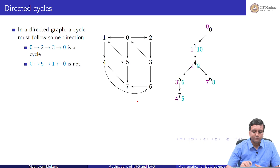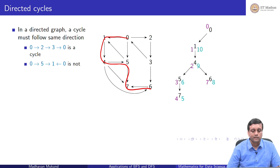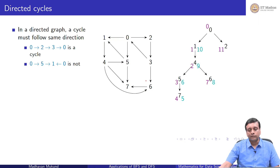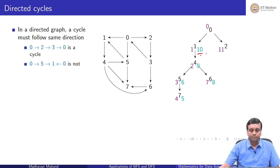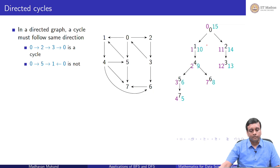Coming back to 0, we now explore the right side — the other neighbor of 0, which is 2, entering it with number 11. From 2, we go to 3 with entry number 12. From 3, we can only go to 6 or 0, both already visited, so we exit 3 with number 13. We exit 2 with number 14, and finally exit 0 with number 15.